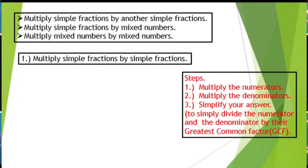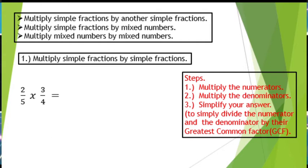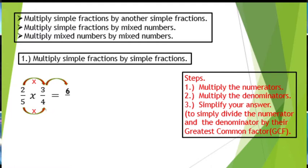Let us have this example. We have 2 over 5 times 3 over 4. The first step in multiplying simple fractions by another simple fraction is to multiply the numerators. We have the numerators 2 and 3. 2 times 3 is equal to 6. Then, multiply the denominators. We have the denominators 5 and 4. 5 times 4 is equal to 20.